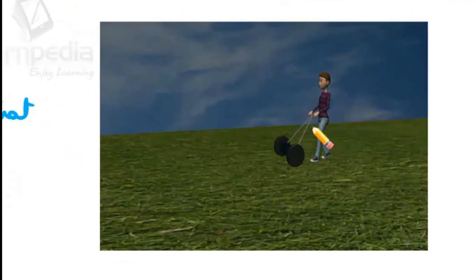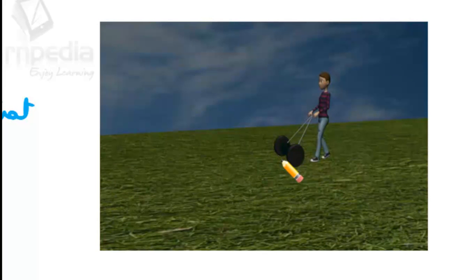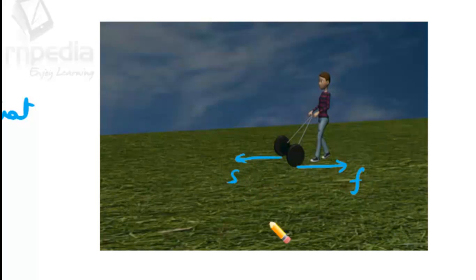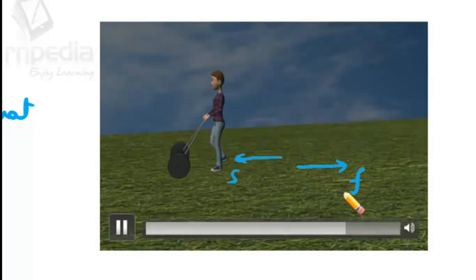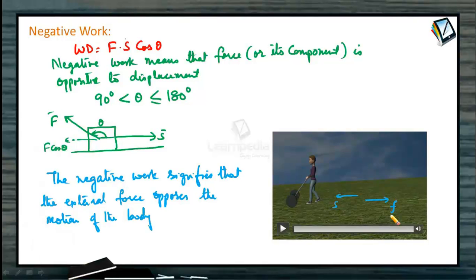Now see in this example — he is applying a force and pushing the lawn roller, so the displacement is in the forward direction. But as it is cutting the grass, there will be friction. The friction force acts in the opposite direction; theta is 180 degrees. So as the lawn roller is pushed forward, friction force opposes it — work done by friction force is negative.